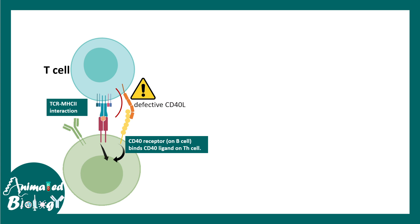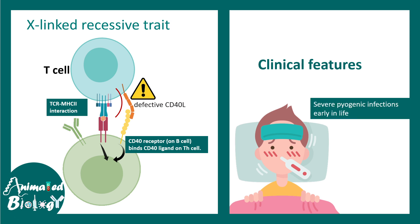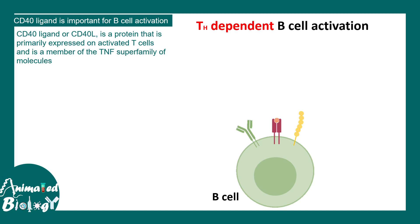That leads to several problems. It prevents isotype switching, so by default IgM antibody gets produced and other isotypes are not produced. This kind of situation leads to clinical conditions like severe pyogenic infections in early life, opportunistic infections from Pneumocystis, Cryptosporidium, and CMV.